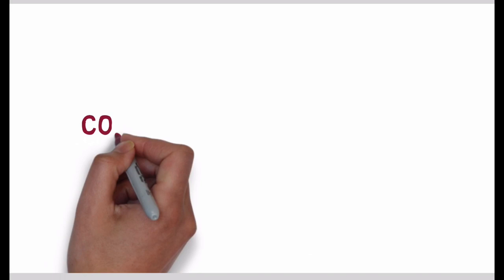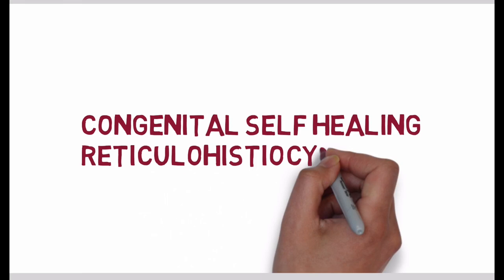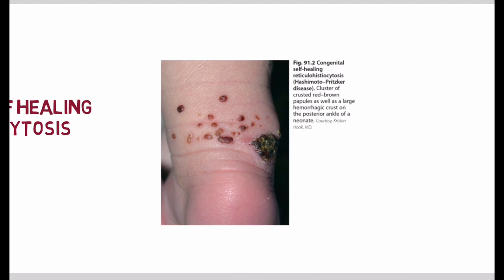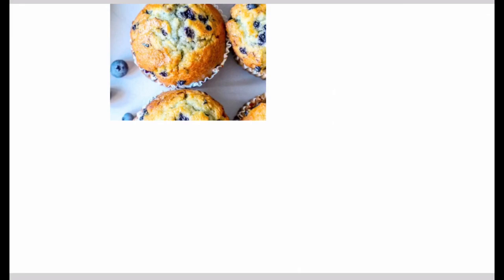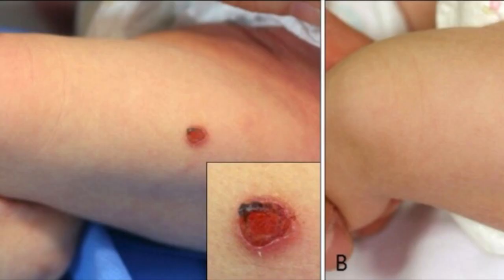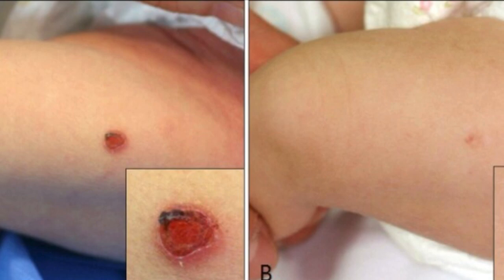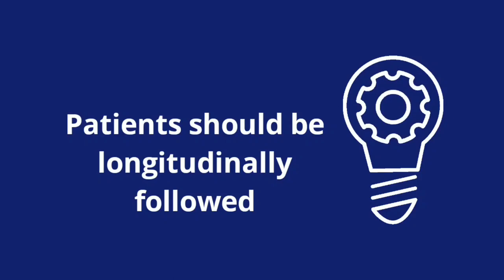Congenital self-healing reticulohistiocytosis is also a single-system involvement of Langerhans cell histiocytosis, and it is limited to the skin. As the name suggests, it is self-healing. It is present at birth or within a few days of life, with widespread red to purplish-brown papulonodules which have a vascular appearance or resemble a blueberry muffin. Solitary papules or nodules which are eroded or ulcerated can also develop. Being self-healing, it can take from weeks to months to resolve. It is very important to understand that even patients diagnosed with congenital self-healing reticulohistiocytosis should be longitudinally followed, because it can transform into multi-system disease.